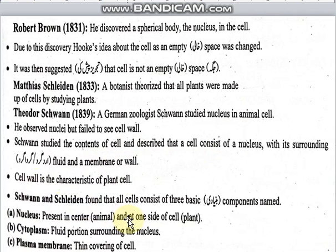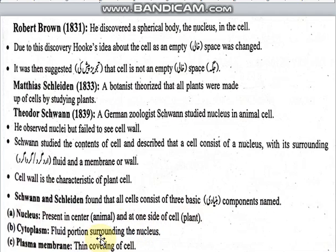Schleiden and Schwann found that the cell consists of three basic components: the nucleus — found in the middle of animal cells and to one side in plant cells — the cytoplasm, which is the fluid portion surrounding the nucleus, and the plasma membrane, which is the thin covering of the cell.